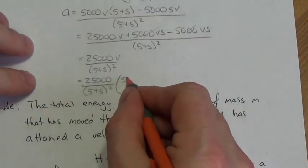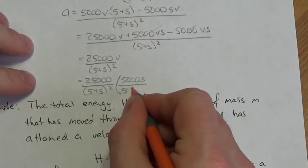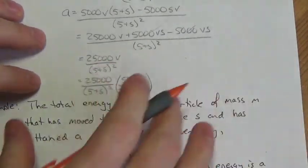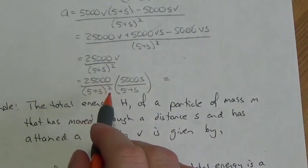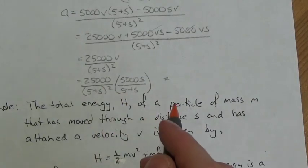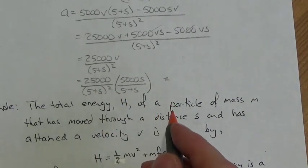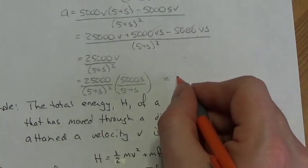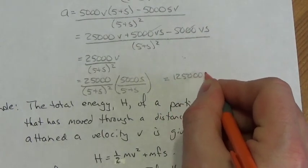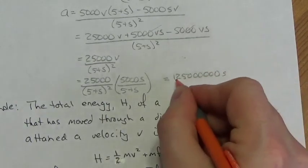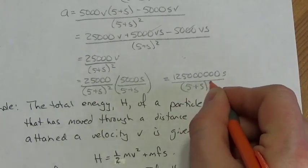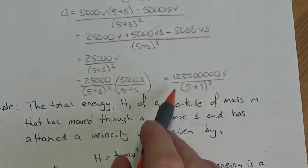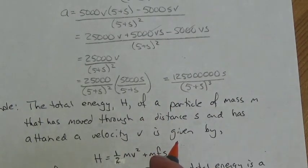So that's 25000 multiplied by 5000s over (5 + s), all over (5 + s) squared. That gives 125,000,000 times s in the numerator. The denominator has three identical factors of (5 + s), so acceleration equals 125,000,000 times s over (5 + s) cubed.